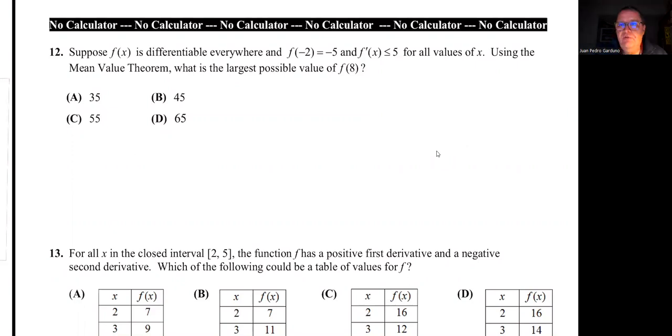Problem number 12. Suppose that f(x) is differentiable everywhere. Now, if a function is differentiable, it means that it must be continuous. We know that f(-2) equals -5, and f'(x) is less than or equal to 5 for all values of x. Using the mean value theorem, what is the largest possible value of f(x)? This one is a tricky one.